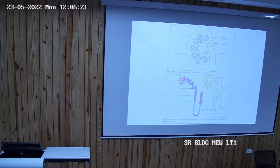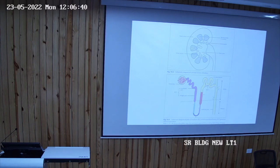The ureter opens into the urinary bladder. The urinary bladder is for temporary storage of urine. Through the urethra, the urine is excreted out. This picture of the gross structures is seen in the sagittal section of the kidney.